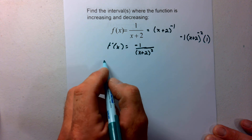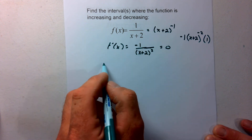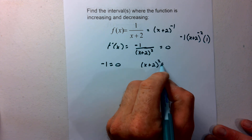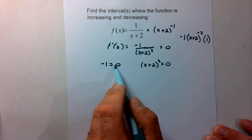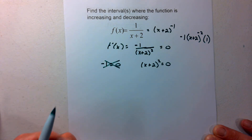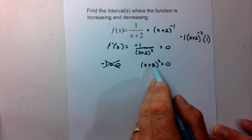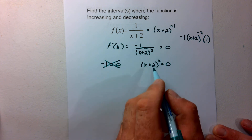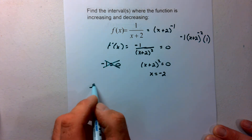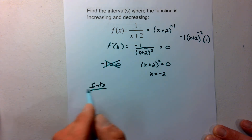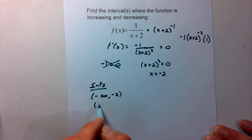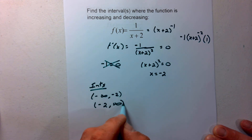I'm going to set the numerator equal to zero and the denominator equal to zero. Setting the numerator negative 1 equal to zero doesn't make sense, so we get rid of that. The only critical value comes from the denominator: (x+2) squared equals zero gives x equals negative 2. So my intervals are negative infinity to negative 2, and negative 2 to infinity.